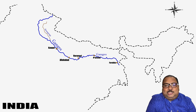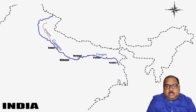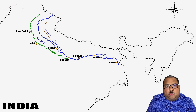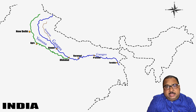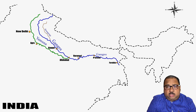Ganga continues its flow across Uttar Pradesh, passing by Kanpur. When it reaches Prayagraj — the other name of the holy city of Allahabad — the longest tributary of Ganga, which is the Yamuna river, merges with it. The Yamuna originates from the Yamunotri glacier in Uttarakhand and is also popularly known as river Kalindi.